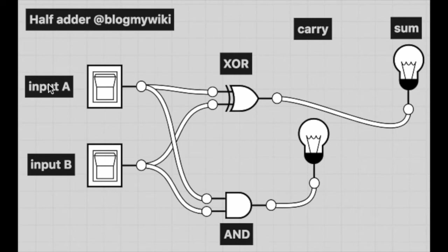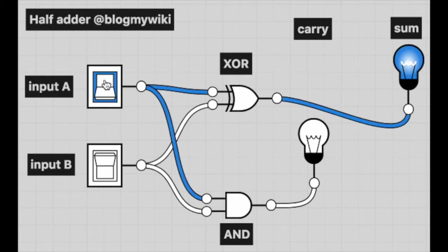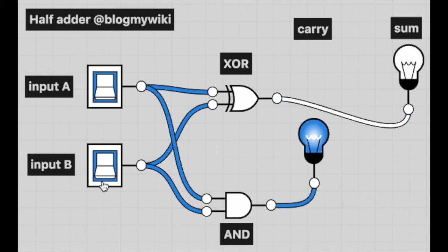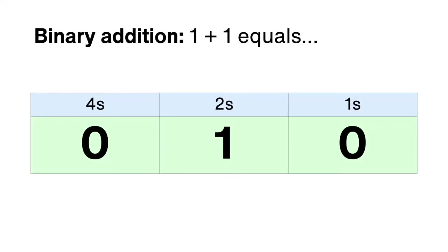If both switches are off, it's 0 plus 0, so no lights are lit — we have binary 00. If either switch A or B is on, the sum light is lit but not the carry, so we have binary 01. But if both A and B are switched on at the same time, we're adding 1 plus 1. The answer is 10 — it doesn't mean ten, it means no units and 1 in the twos column, so the answer to 1 plus 1 is 2.